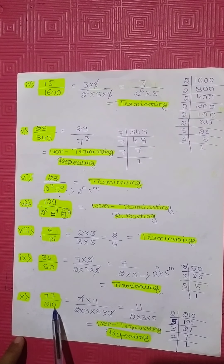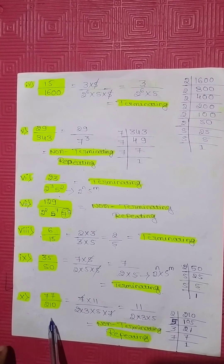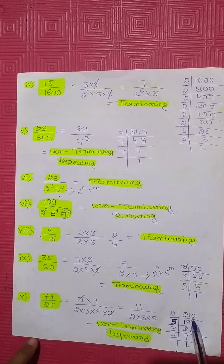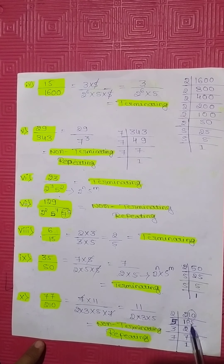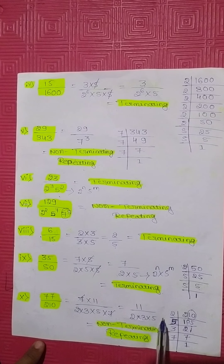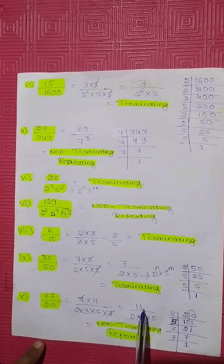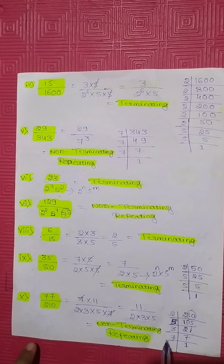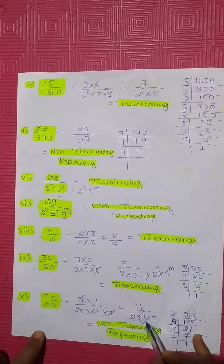Tenth question: 77 divided by 210. 77 can be written as 7 into 11. The denominator 210 in prime factorization is 2 into 3 into 5 into 7. The 7 cancels, leaving 11 divided by 2 into 3 into 5. This is a non-terminating repeating decimal expansion because the denominator contains 3.